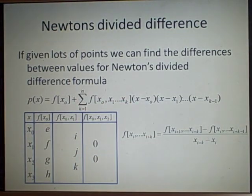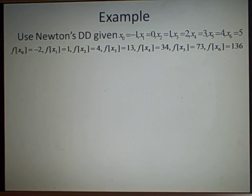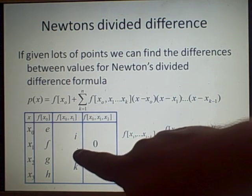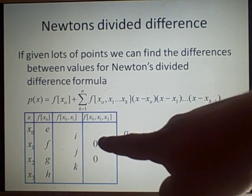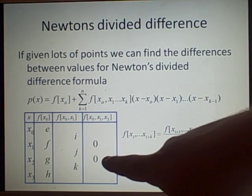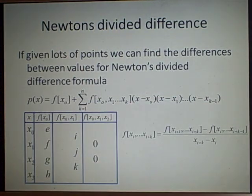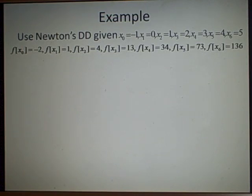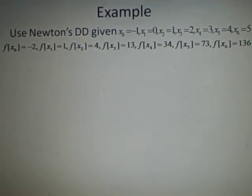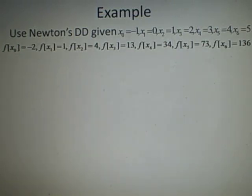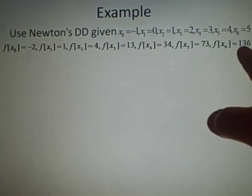We usually lay this out in a table. The first column entries correspond to adjacent pairs: x0,x1 then x1,x2 then x2,x3, and so on. The next column entries are f[x0,x1,x2], f[x1,x2,x3], and so on — each value sits in the middle row of the inputs used. The example has x values: -1, 0, 1, 2, 3, 4, 5 with f values: -2, 1, 4, 13, 34, 73, 136.